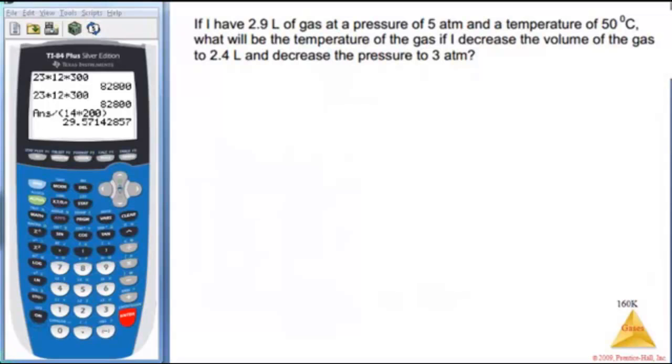All right, I have 2.9 liters of a gas at a pressure of 5 atm and a temperature of 50°C. What will the temperature of the gas be if I decrease the volume? So let's make a P, V, T table. I start with initially and final. I start with 2.9 liters, I have 5 atm, and my temperature is 50°C plus 273. As you know, you've got to use Kelvin. That's 323 K.